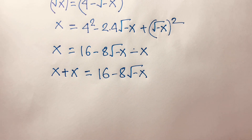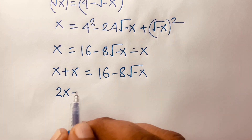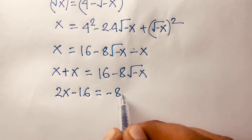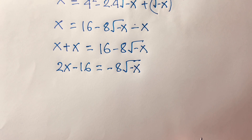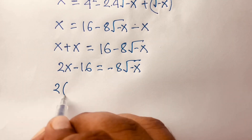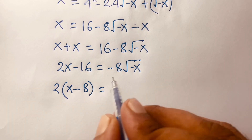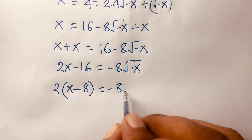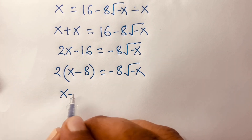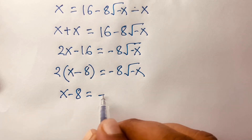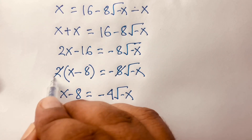So we get 2x minus 16 is equal to minus 8 times square root of minus x. Dividing both sides by 2, we get x minus 8 is equal to minus 4 times square root of minus x.